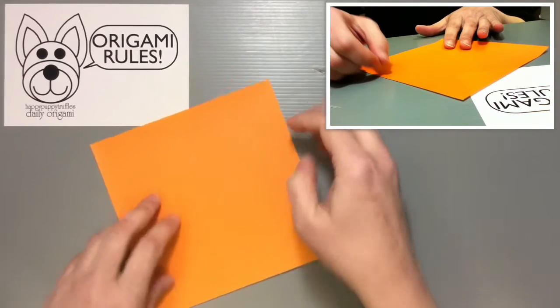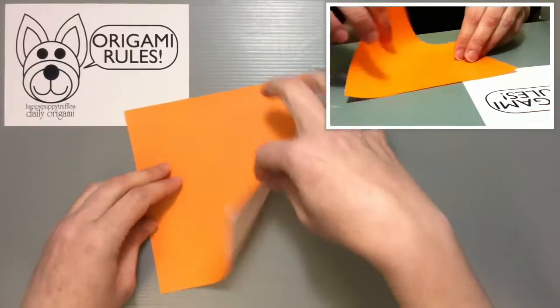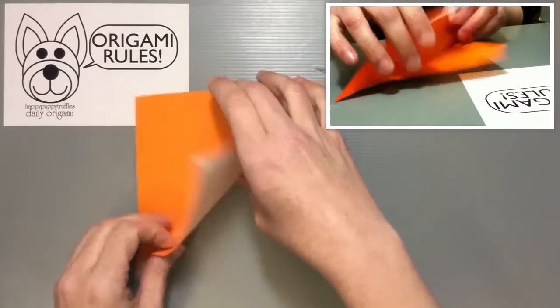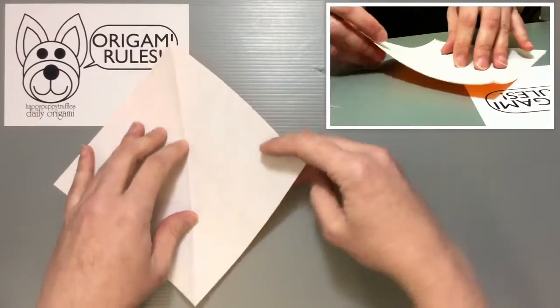What we're going to do is starting off, we're just going to fold our paper in half diagonally so that we know where our center is.